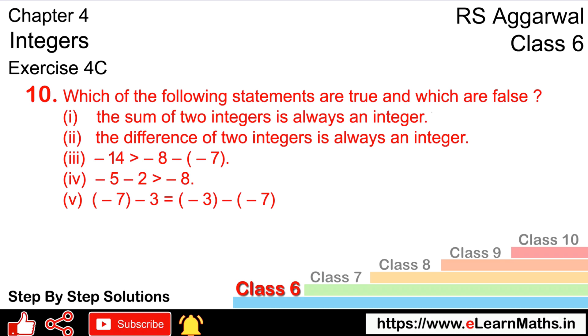If you have seen my intro part, I have clearly told you that when we, for example, take minus 3 plus 8, the answer is 5 — it will be an integer. Integers include negative values, natural numbers, and whole numbers, so the result will always be an integer. Hence, this statement is true.